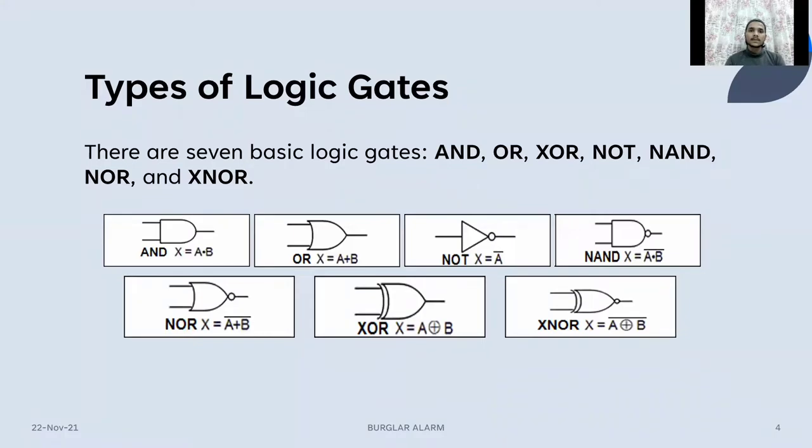Types of logic gates: There are seven basic logic gates: AND, OR, NOT, NAND, NOR, XOR, and XNOR.